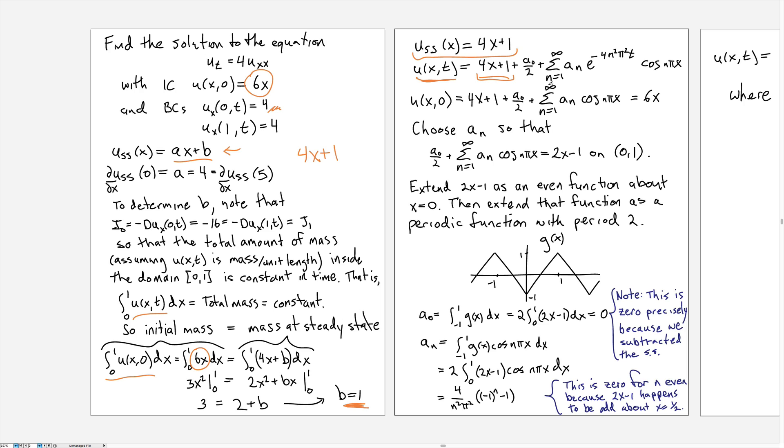So we get the steady state plus, now because we're dealing with Neumann boundary conditions now, we want to use the cosine functions. And in this case l is 1, so it's cosine of nπx.